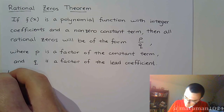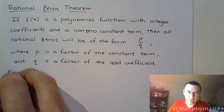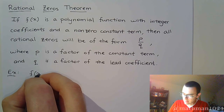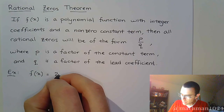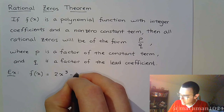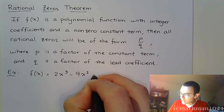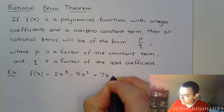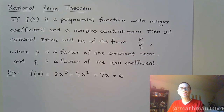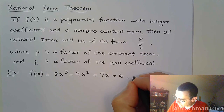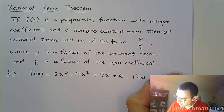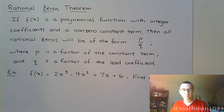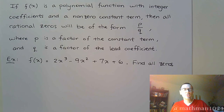For example, let's take a look at the function f(x) = 2x³ - 9x² + 7x + 6. If I don't give you any information and I give you this polynomial and say find all zeros — I want you to find all zeros for this polynomial function — let's start with what we know.